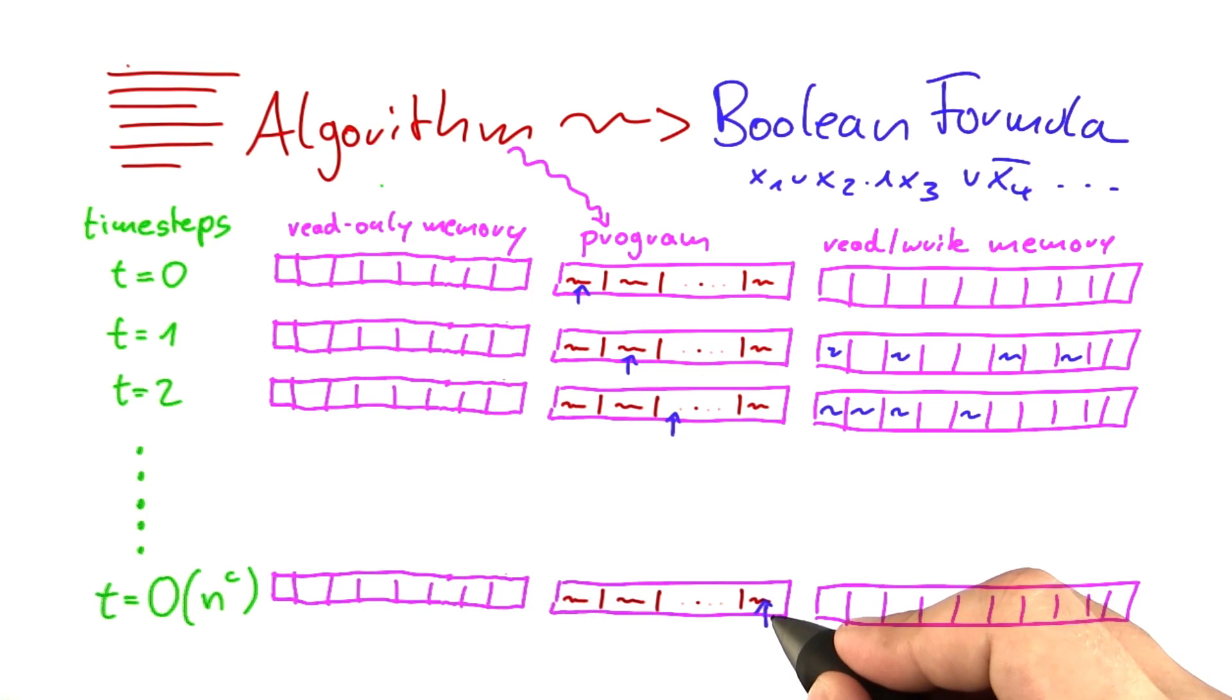And at a certain point in time, the program will say, I'm done. And it will hopefully have a certain output here. But since we're working with decision problems, actually, it's only interesting to us if the program says yes or no at the end. So for decision problems, we don't even really care about what's in here.